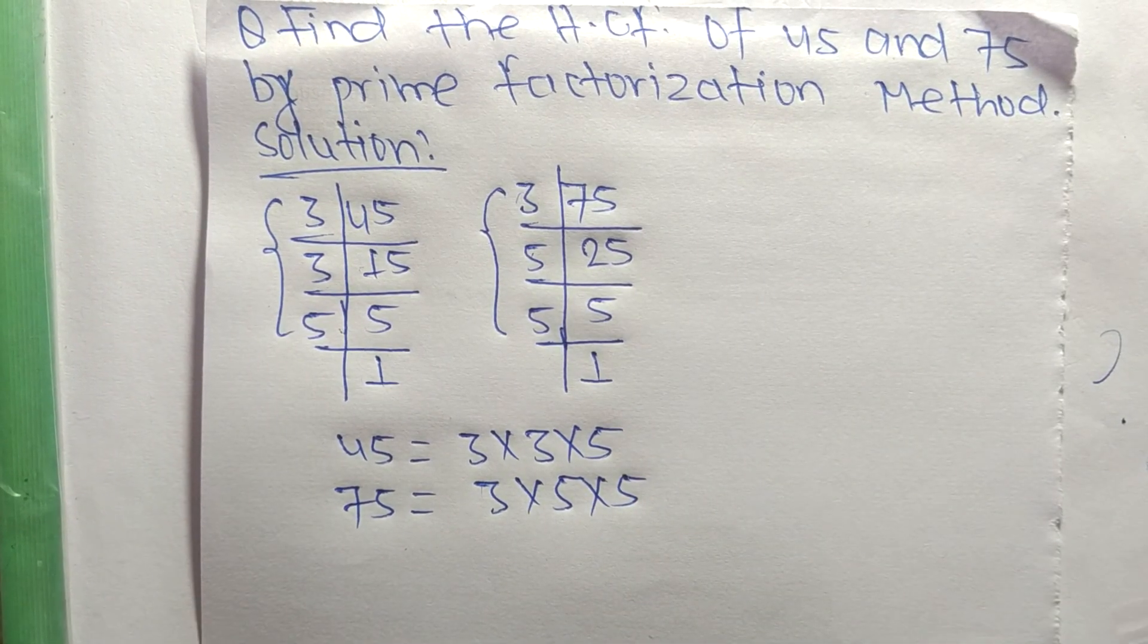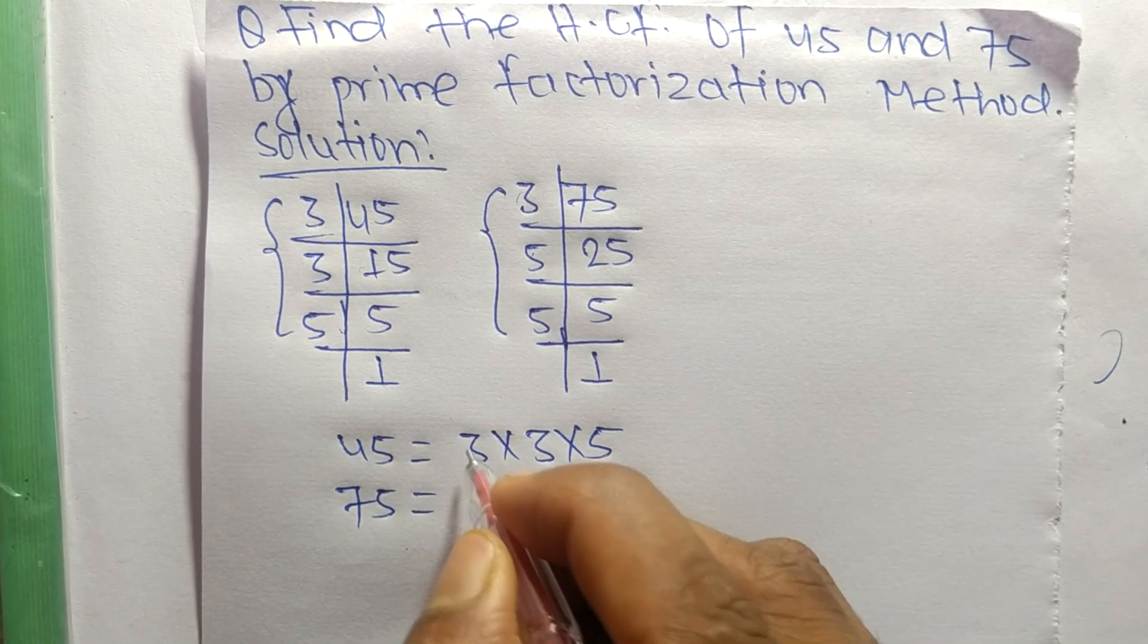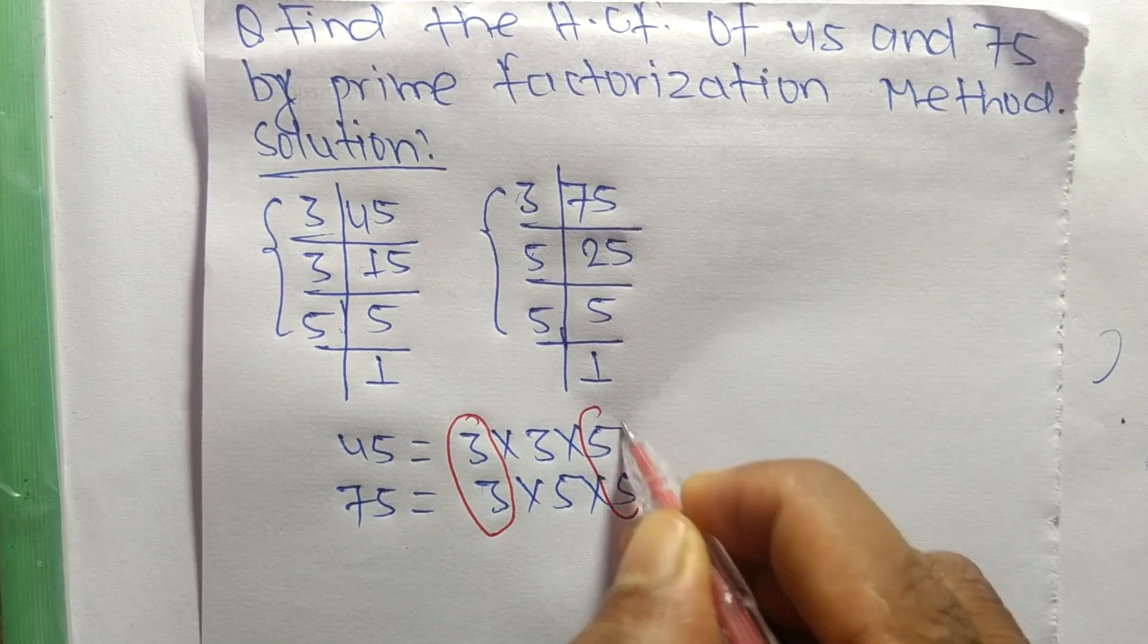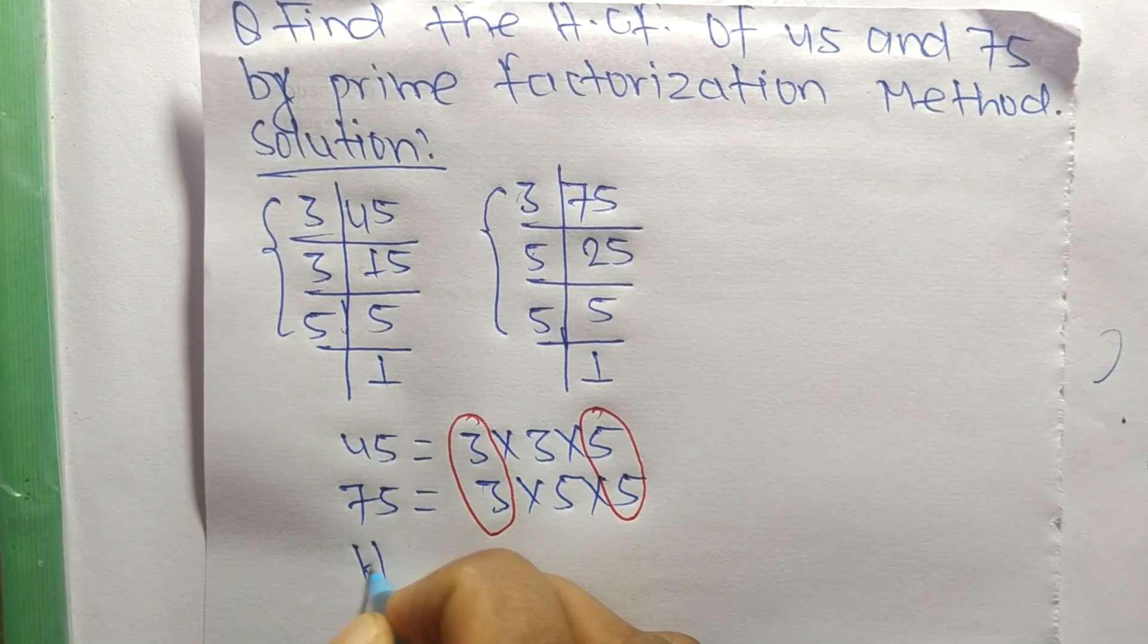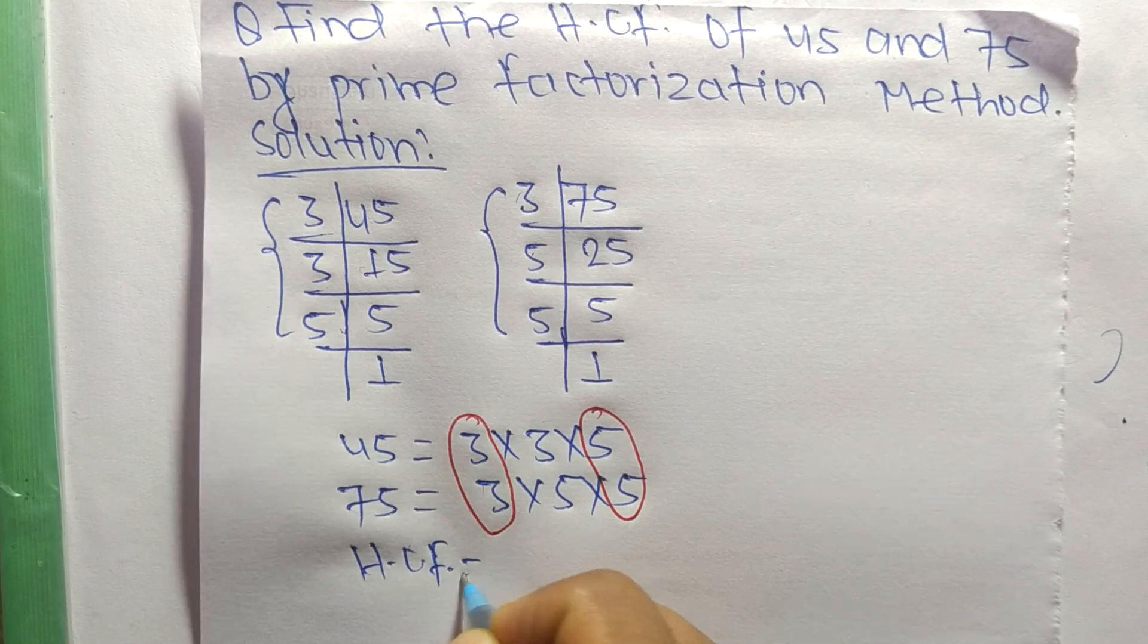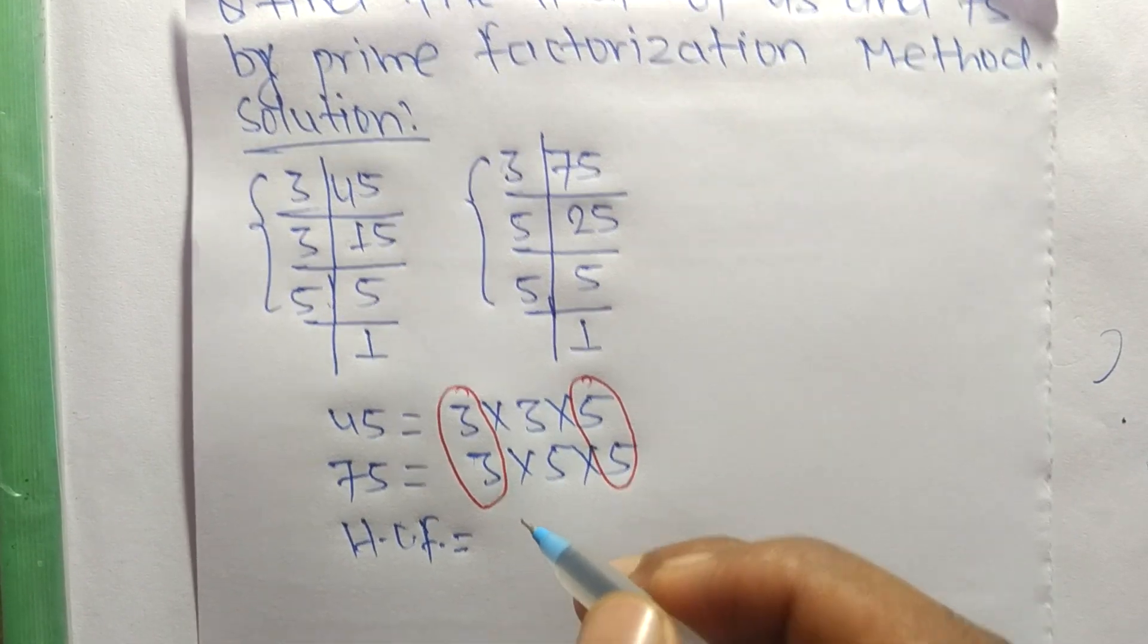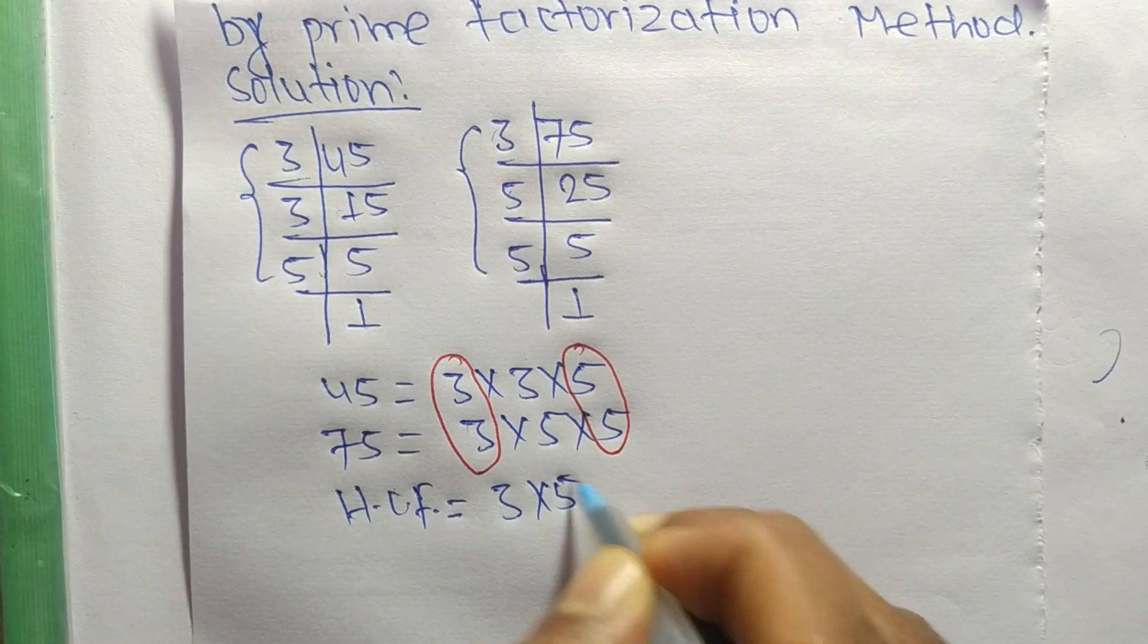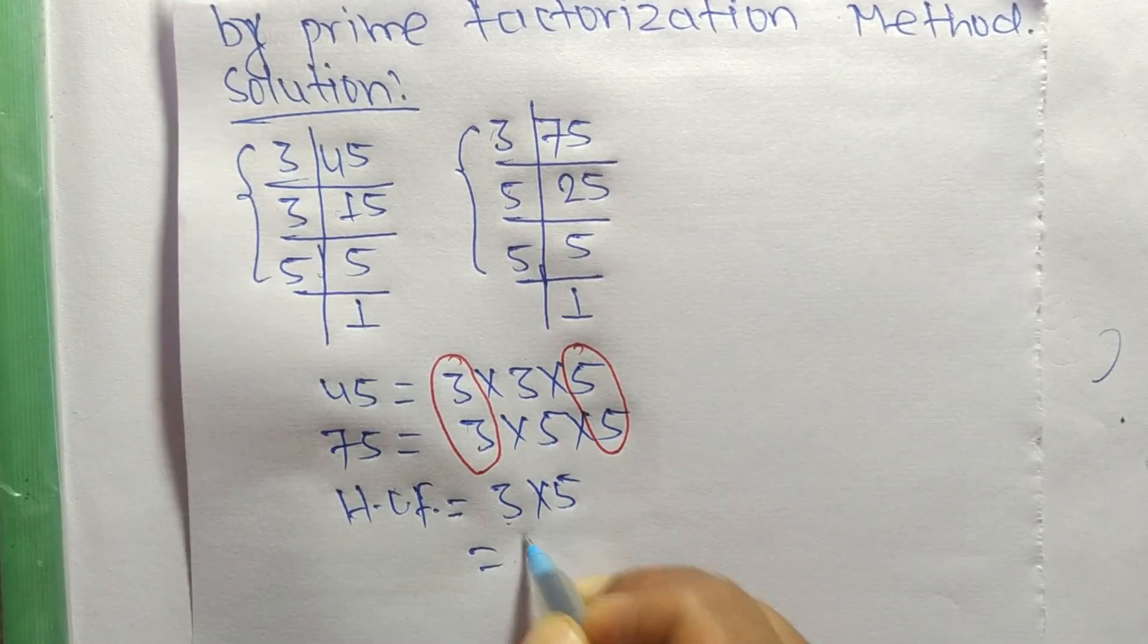In these prime factors, the first common factor is 3 and the second one is 5. So the HCF is equal to the product of common factors, which are 3 times 5. 3 times 5 means...